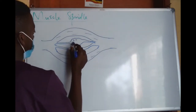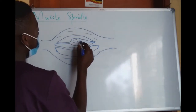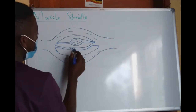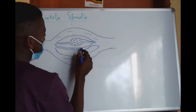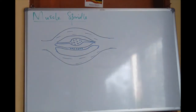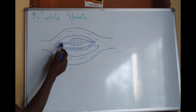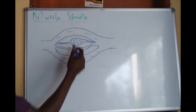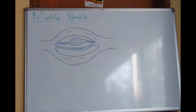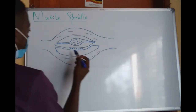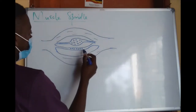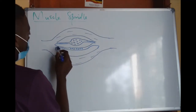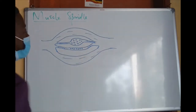The nuclear bag has several nuclei at the expanded portion within the center, whereas the nuclear chain has nuclei arranged in a chain. These fibres have striated poles at either end, and the center is the receptor portion. This one is also the receptor portion of the nuclear chain, and the striated pole will contract to some little extent.